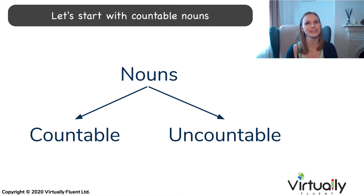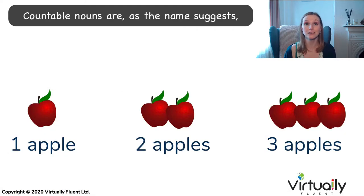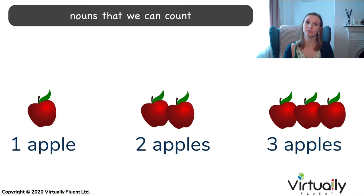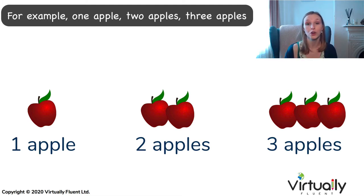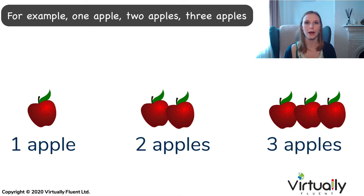Let's start with countable nouns. Countable nouns are, as the name suggests, nouns that we can count. We can put a number before the noun. For example, one apple, two apples, three apples.